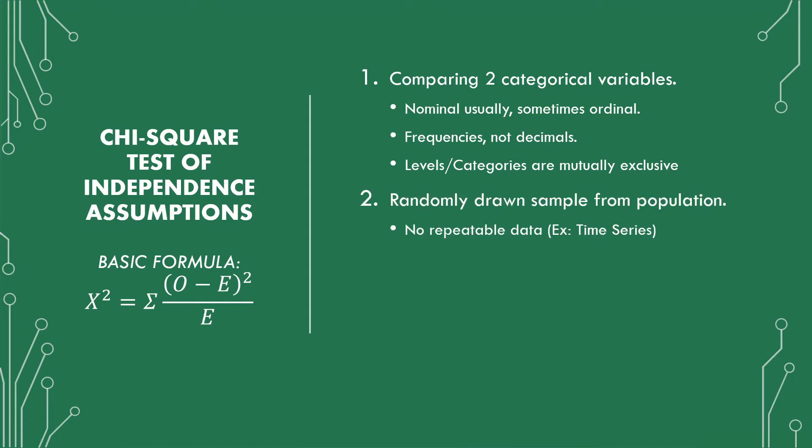The next assumption covers whether or not the sample was drawn randomly from a population, instead of something clearly skewed or something with repeated measures or repeated data. An example of this would be time series, where you're looking at the same subject or subjects over a series of time. This test is not something you want to use when looking at time series data.